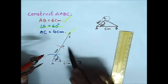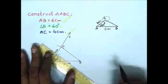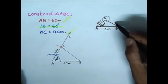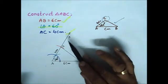So now we got all three points A, B, C. Finally join BC. So this is the required triangle ABC, as you see constructed by the two sides and an angle.